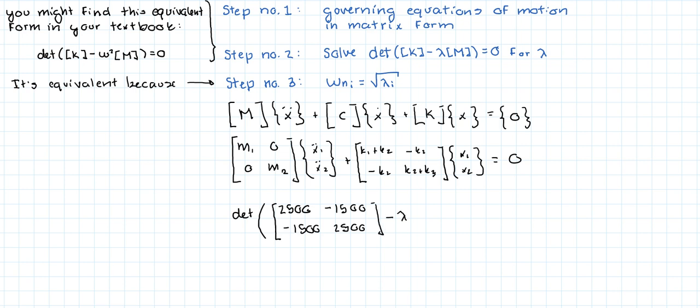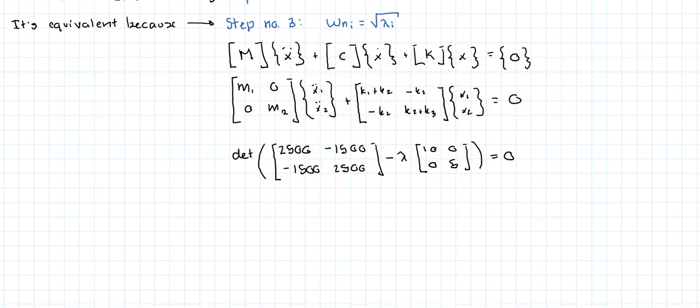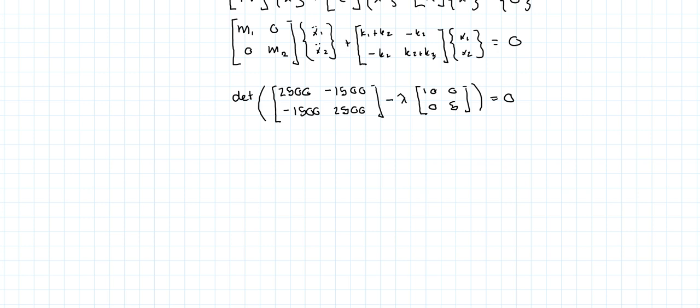Minus lambda times—this time it's the mass matrix—so 10, 0, 0, 5 is equal to 0. We're going to calculate the sum. So 2500 minus 10 times lambda. Minus 1500 does not change because the off diagonal elements are 0. And then we get 2500 minus 5 times lambda. That's equal to 0.